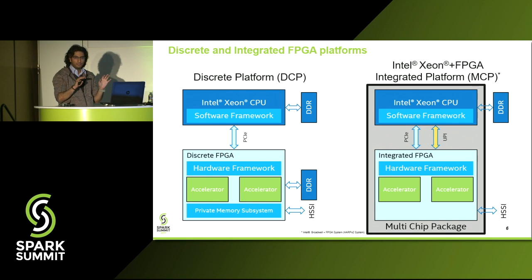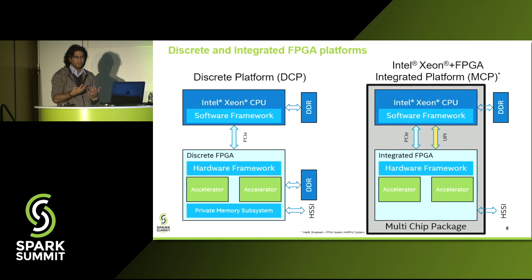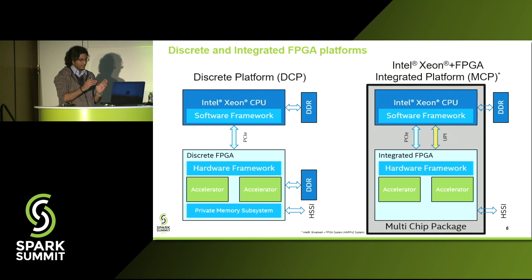Since the accelerator you build on your FPGA sits very close to your Xeon, you can access the Xeon's L3 as well as your system memory. Irrespective of whether it's discrete or integrated, there are very similar components inside the FPGA itself. Intel greatly abstracts the hardware interfaces — what we call hardware frameworks — so as an accelerator developer you don't need to worry about PCI protocols and low-level details. We give you a simple load-store kind of interface.